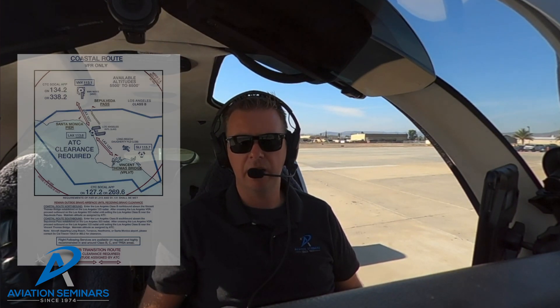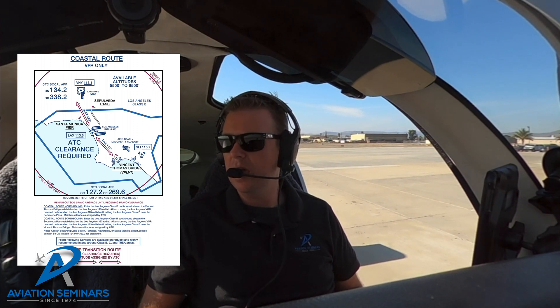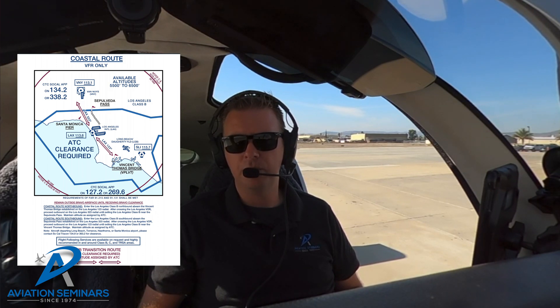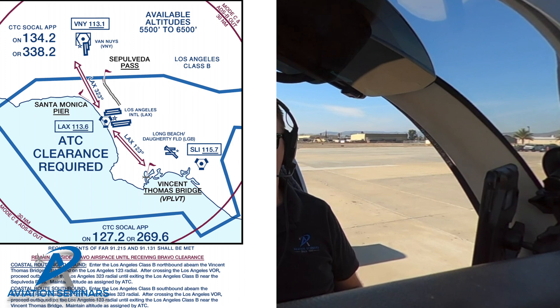A good example of this is out in Los Angeles for the Los Angeles Class Bravo. One of the routes through the Class Bravo is something they call the Coastal Route. That Coastal Route involves flying the 123 degree radial inbound to the VOR. Once you hit the VOR, you then have to fly a 323 degree outbound on that VOR. We're going to simulate this using the Julian VOR here in San Diego and show you how to easily do that via OBS mode — that's the subject of this aviation seminar's quick tip.